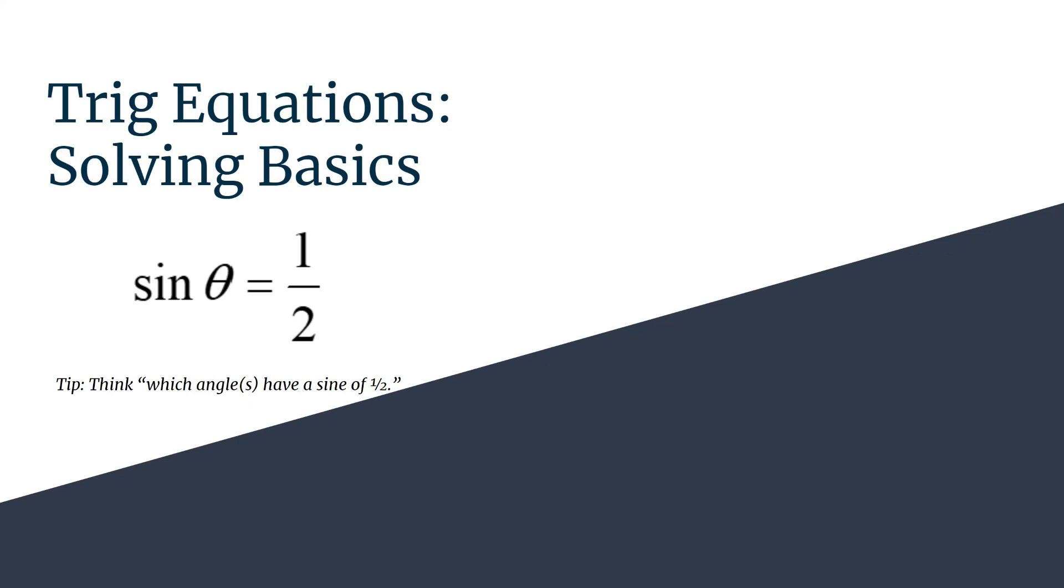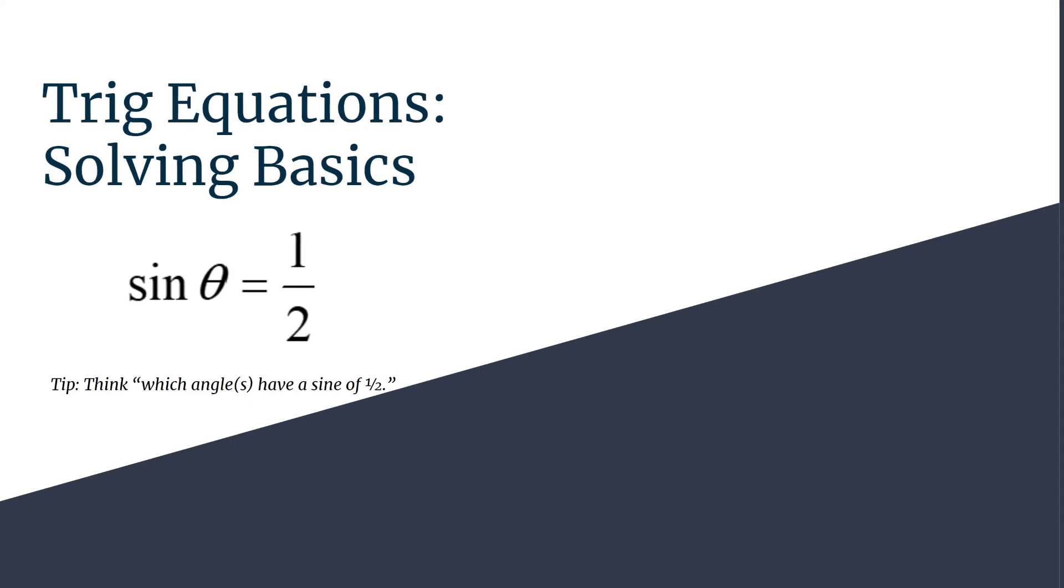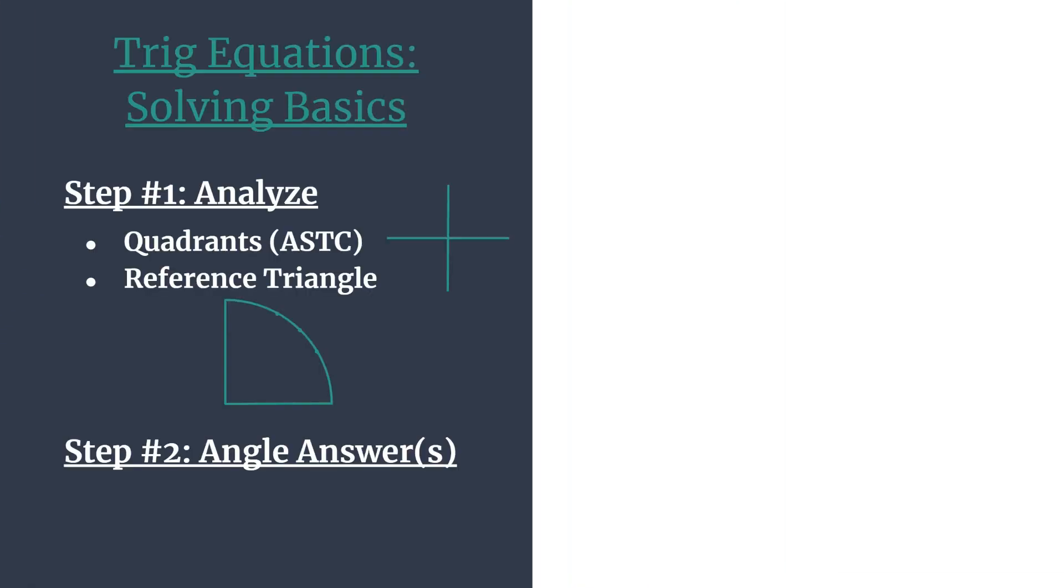So make sure you know your unit circle. Solving an equation like this will feel very similar, and we're just kind of going in the opposite order. So let's take a look. Here's our outline. In step one, we do our analysis. We figure out which quadrants we're working in and which reference triangle we should use, and that will help us in step two determine our angle answers.